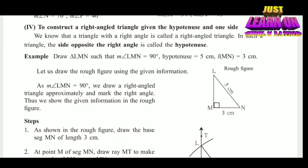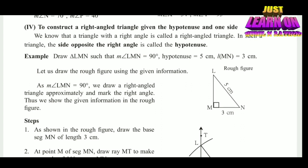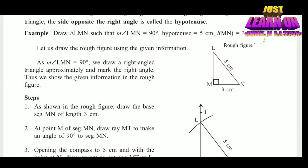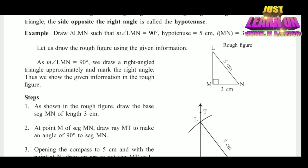In such a triangle, the side opposite the right angle is called the hypotenuse. We are given a triangle called triangle LMN such that the measurement of angle LMN equals 90 degrees, the hypotenuse equals 5 cm, and segment MN equals 3 cm. According to the given information, here is the rough figure. We draw a right-angle triangle approximately and mark the right angle, showing the given information in the rough figure.